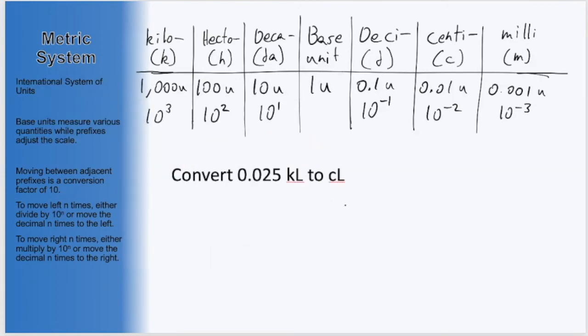Next, let's consider converting 0.025 kiloliters to centiliters. Well, we are now starting in the prefix of kilo, so we are over here, and want to end up in centiliters, which means we want to go over here,